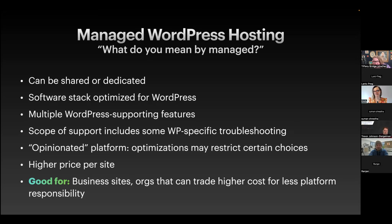Managed WordPress typically starts at around $20–$25 per month per site, with per-site cost potentially going down as your spend increases. It's good for business sites where downtime means you can't take orders or communicate with customers. Larger agencies also find value in it — they trade the higher cost for not having to think about anything underneath WordPress.